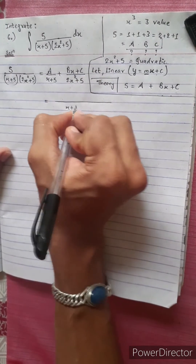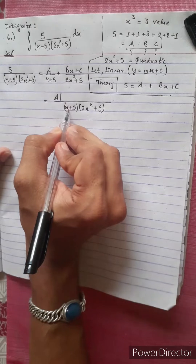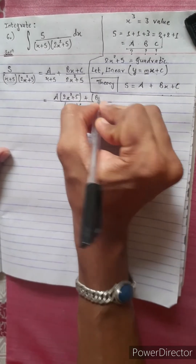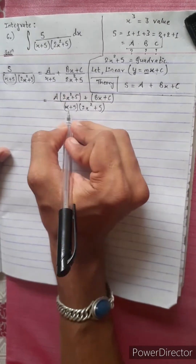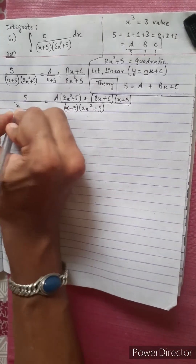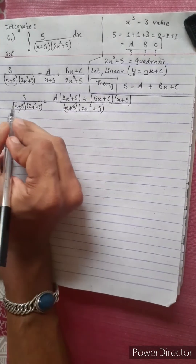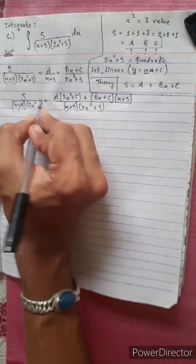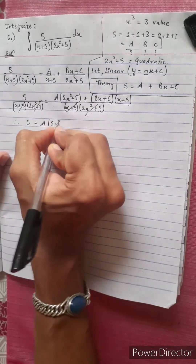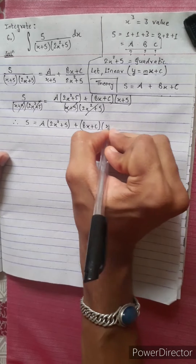So, 2x squared plus 5 times x plus 5 gives us: 5 equals A times (2x squared plus 5) plus (Bx plus C) times (x plus 5), which expands as a plus bx plus c form.